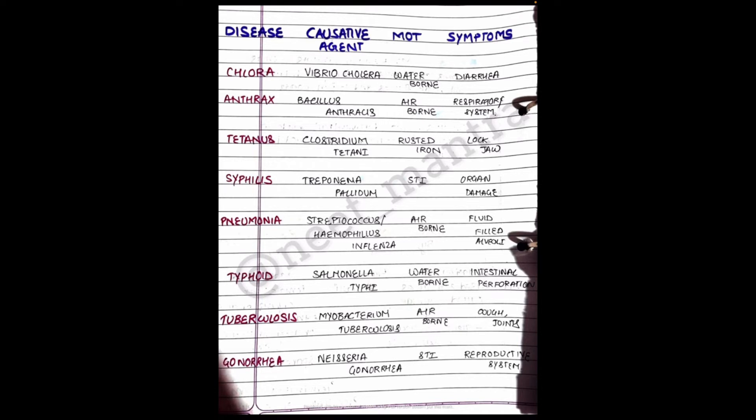Next we have Anthrax. It is caused by Bacillus anthracis. Mode of transmission is airborne or droplet infection, meaning it is transmitted through air. Respiratory disorders are seen in this disease.